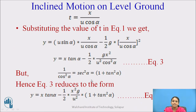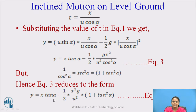From the horizontal equation, T is equal to X divided by U cos alpha. By substituting the value of T in the equation of trajectory and simplifying, you will get the final equation of trajectory: Y is equal to X tan alpha minus one-half into X squared g divided by U squared into (1 plus tan squared alpha).